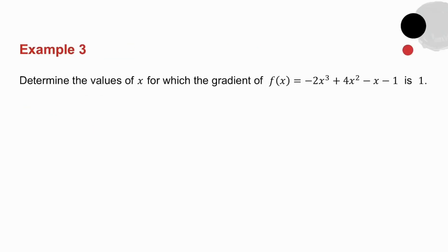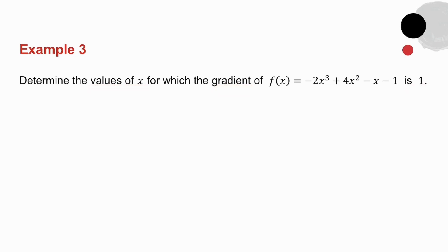Example number 3: determine the values of x for which the gradient is 1. So in this example, I've given you what the gradient is, and you've got to work out the x values. Pause the video, try this yourself, and then we'll do it together.